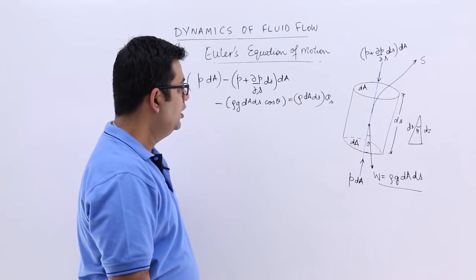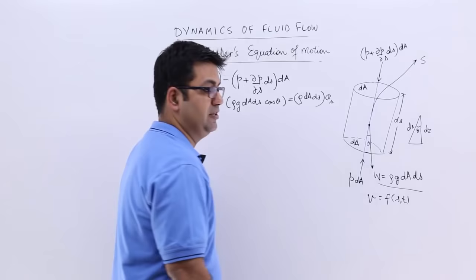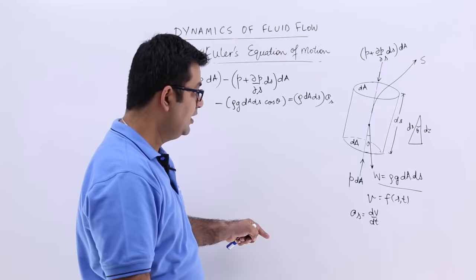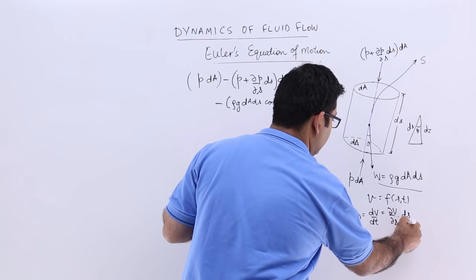If you say that the velocity of the flow is V, then V would be a function of s and t. So it would be a function of space and time. If I have to find out A_s, A_s would be the differential of V with respect to t. But V is further a function of s and t, so I will have to use the partial differential. So I will use curly V upon curly s into ds by dt plus curly V upon curly t.